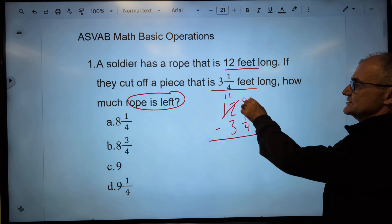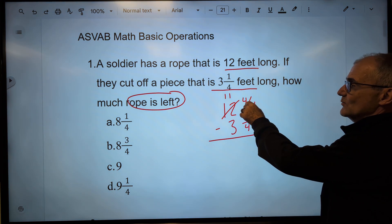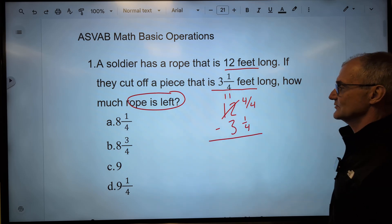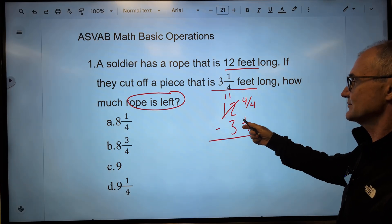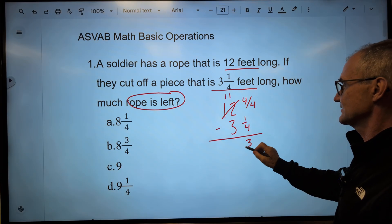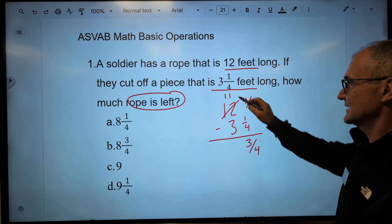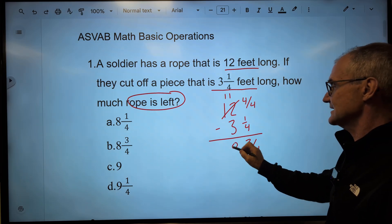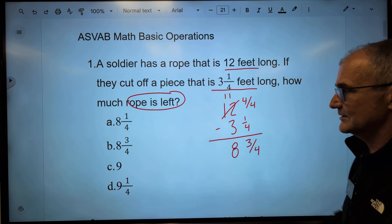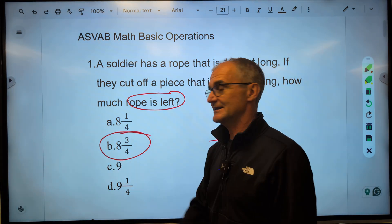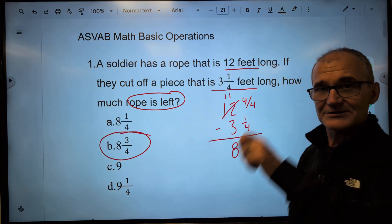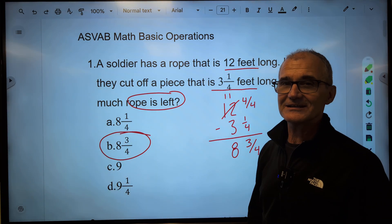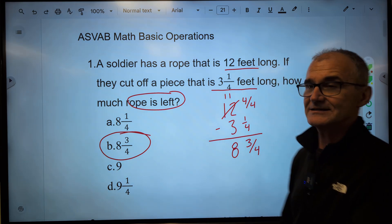This is 12 feet 0 quarters or 12 and 0 in a fraction. I have to borrow a whole foot from this and make this 11 feet and 4/4. 4/4 is the equivalent of 1. That 1 plus 11 makes 12. 4 quarters minus 1 quarter is 3 quarters. 11 minus 3 is 8. Correct answer, 8 3/4, answer B right there. If you got it right, put a little smiley face on there. If you got it wrong, keep track of it for your score out of 10.